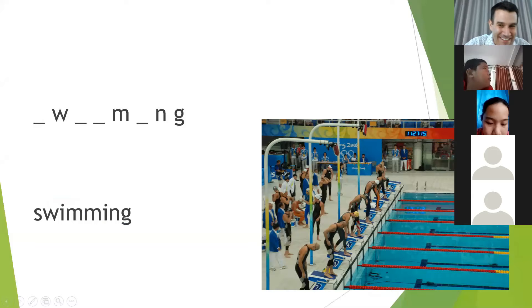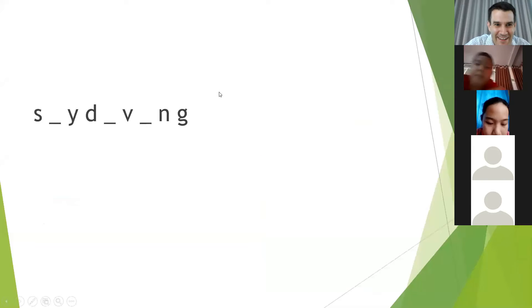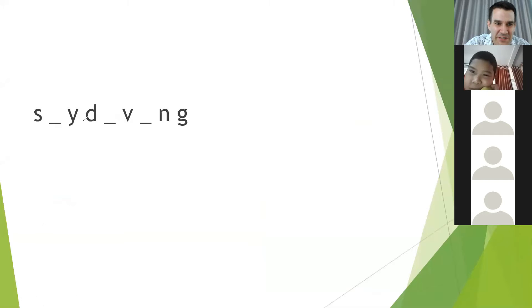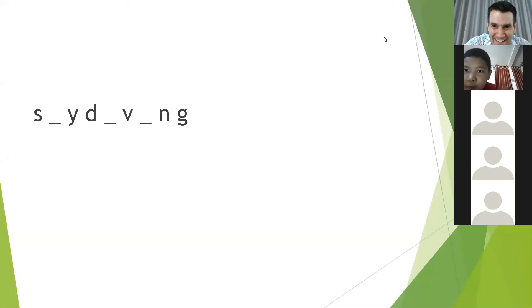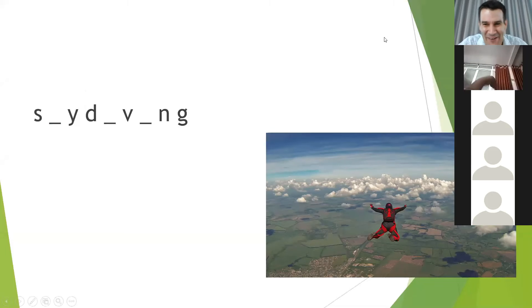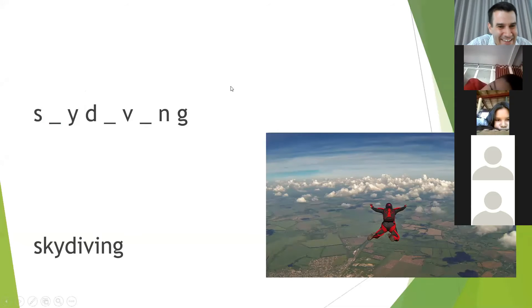The next one I do not think you will get. This one may be new to you, and I do not think any of you have done it before. I hope you have not! Only missing three letters because I think it is difficult. It is made up of two words together — sky and dive — skydiving. Here is a picture of skydiving. I did this one time. I was very scared and I do not like it. I will never do it again. Not fun for me — I was just scared.